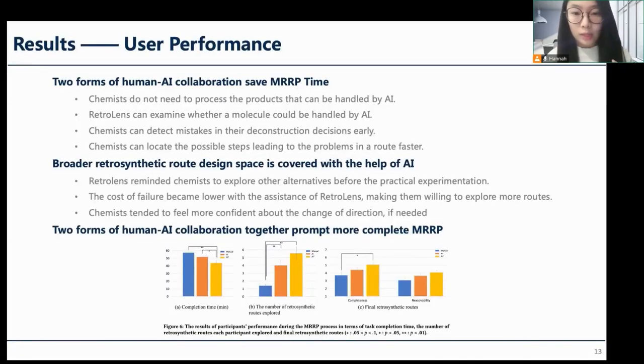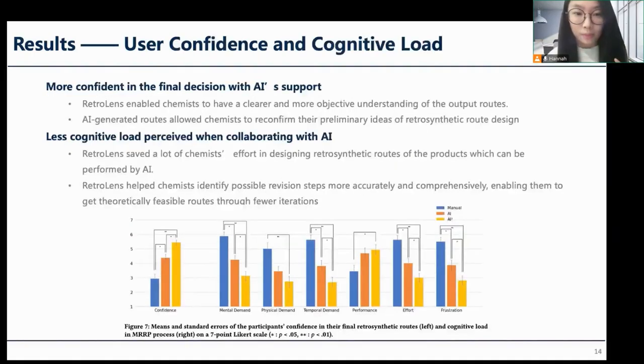The results show that the two forms of human-AI collaboration in our system save MRRP time and prompt more complete MRRP. Joint molecular deconstruction helped chemists explore a broader design space. In addition, the two forms of human-AI collaboration together boost chemists' confidence in their final route planning and lower their cognitive load.